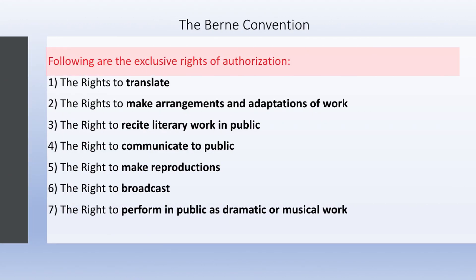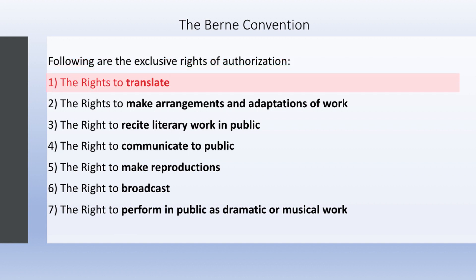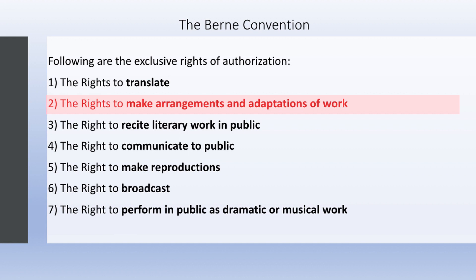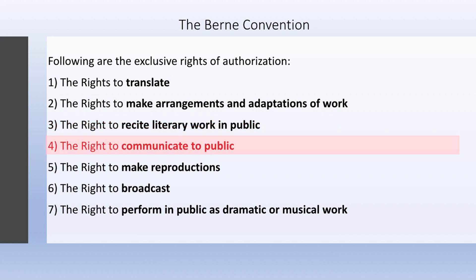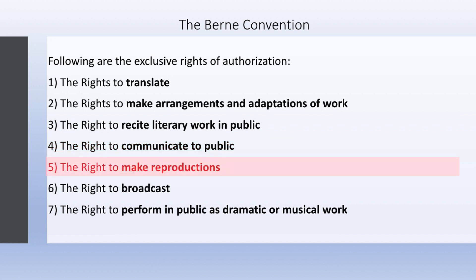The following are the exclusive rights of authorization under the Berne Convention: number one, the right to translate; number two, the right to make arrangements and adaptations of work; number three, the right to recite literary work in public; number four, the right to communicate to the public; number five, the right to make reproductions.